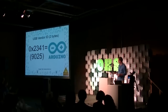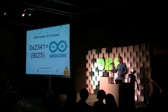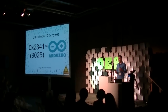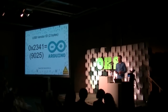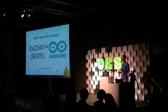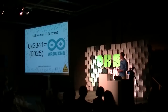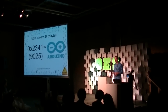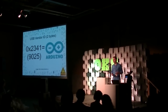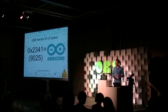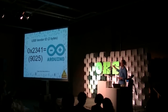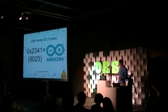That USB ID is two parts. The first part is the vendor ID, and that tells you who actually manufactured the hardware. So here we have 0x2341 in hex — that's 9025 in decimal — and that tells us we have an Arduino plugged in.